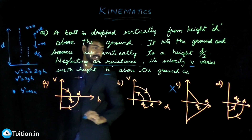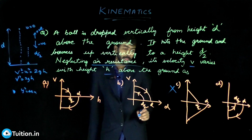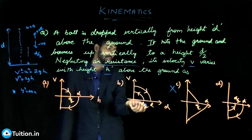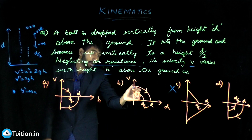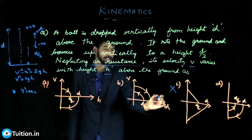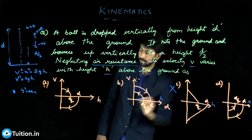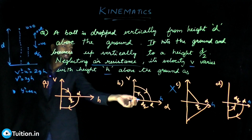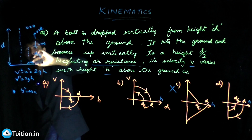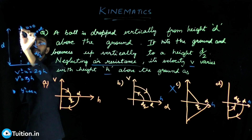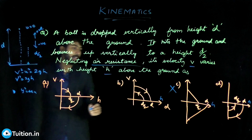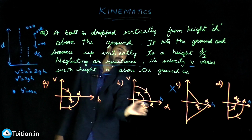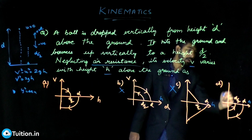When h = d, velocity is zero; when h = 0, velocity is maximum and negative. Now checking the h range: the body travels from d to zero, then from zero to d/2. One of the options shows the body traveling from h = 0 to h = d, which doesn't match the problem — so that option can't be the answer either.